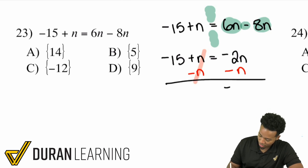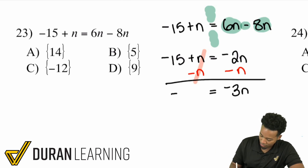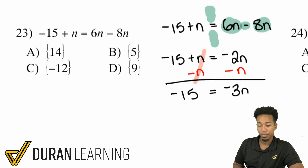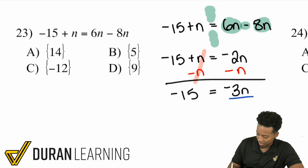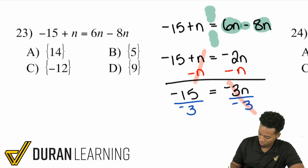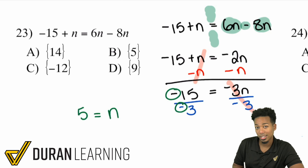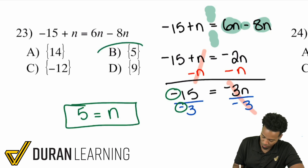So we have negative 3n over here, because negative 2 minus 1 is negative 3. And we have negative 15 on the left. Now what I'll do is finalize this by dividing both sides by negative 3. Because what we're doing is opposite operations — we had negative 3 times n, so we'll divide by negative 3. That cancels on the right, giving us an answer of n equals... we have a negative divided by a negative, which is a positive. Negative 15 divided by 3 is 5. So we have 5 equals n.